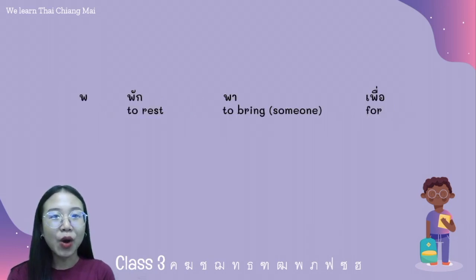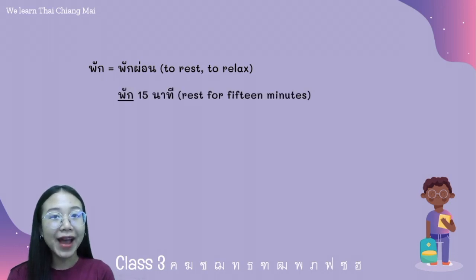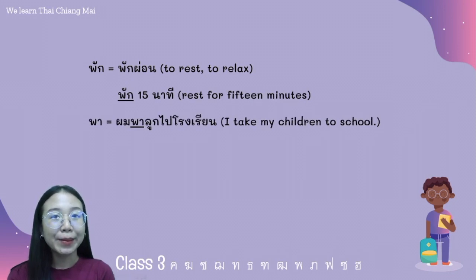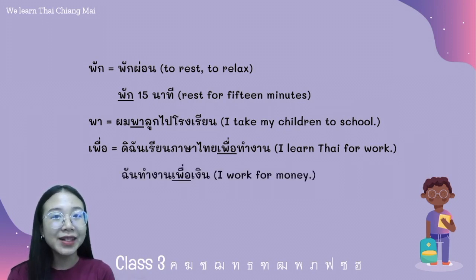Next, พอพาน. We have the words พัก, พา, and เพื่อ. For example, the word พัก: พักผ่อน, พักสิบห้านาที. The word พา — we use it only with persons — for example, ผมพาลูกไปโรงเรียน. The word เพื่อ — for example, ดิฉันเรียนภาษาไทยเพื่อทำงาน. ฉันทำงานเพื่อเงิน.